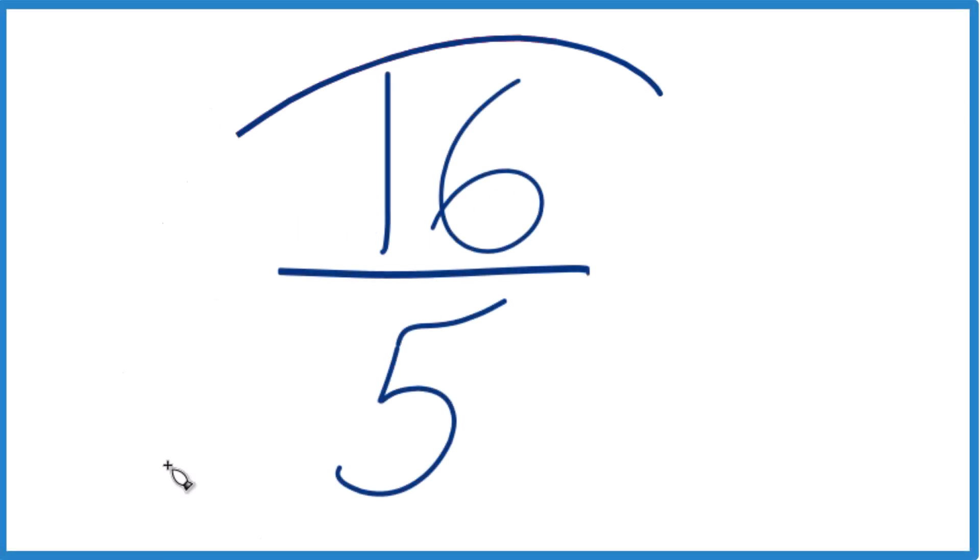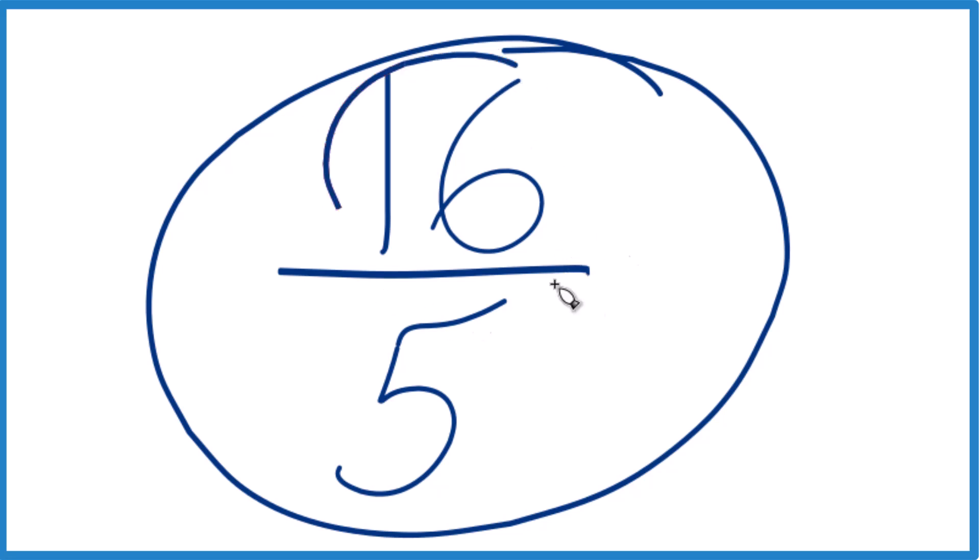Let's simplify this fraction. We have 16 fifths. So how do we simplify that? And because this numerator is larger than the denominator, how do we get this to be a mixed number?